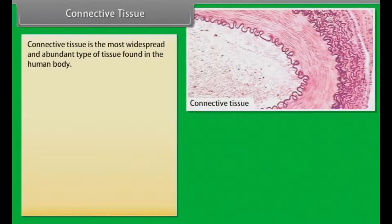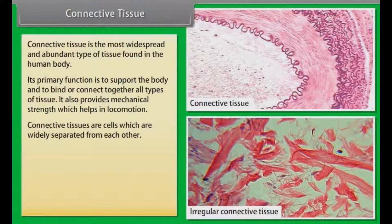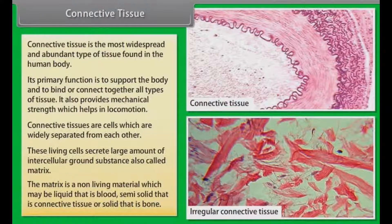Connective tissue is the most widespread and abundant type of tissue found in the human body. Its primary function is to support the body and to bind or connect together all types of tissues. It also provides mechanical strength which helps in locomotion. Connective tissue cells are widely separated from each other, and these living cells secrete large amounts of intercellular ground substance, also called matrix. The matrix is a non-living material which may be liquid (blood), semi-solid (connective tissue), or solid (bone).